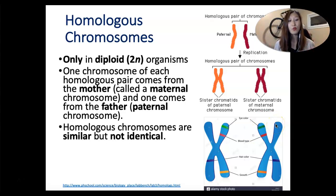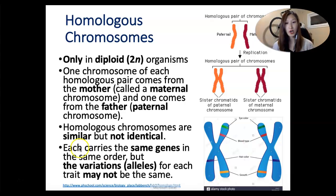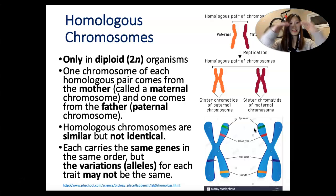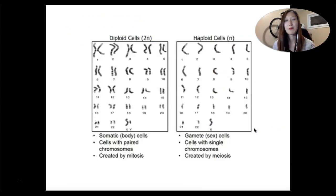For some genes you can have the same version, but sometimes you might not. We call a certain version of a gene an allele — these are variations of the same gene. Each homologous chromosome carries the same set of genes at the same location, but the variations may or may not be the same. That's what we have with homologous chromosomes.